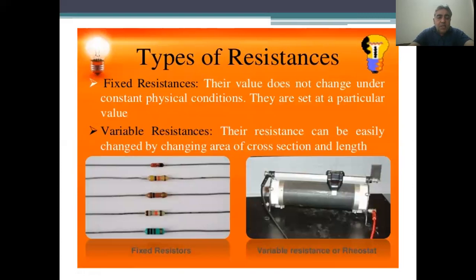Types of resistance: fixed resistance and variable resistance. Fixed resistances are those whose value does not change under constant physical conditions — they are set at a particular value. Variable resistance is one whose resistance can be easily changed by changing the area of cross-section or the length of the conductor.